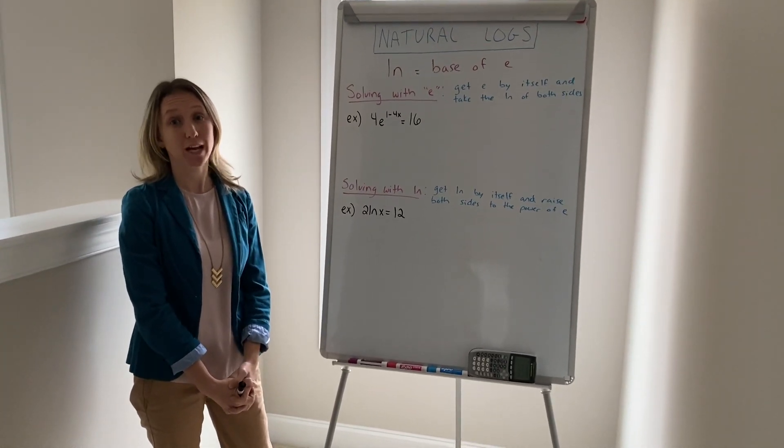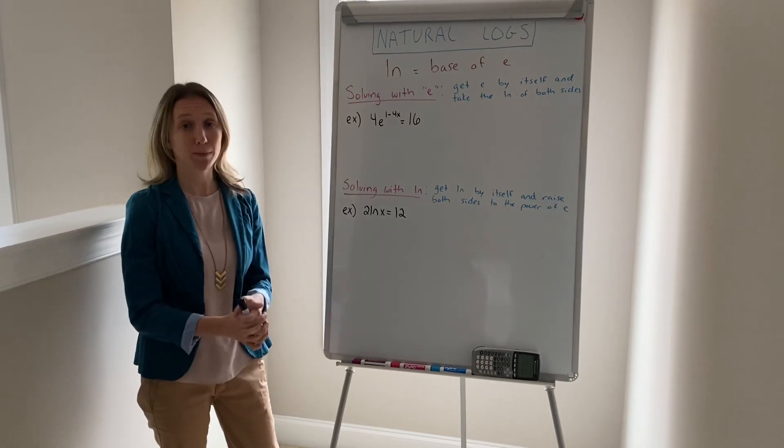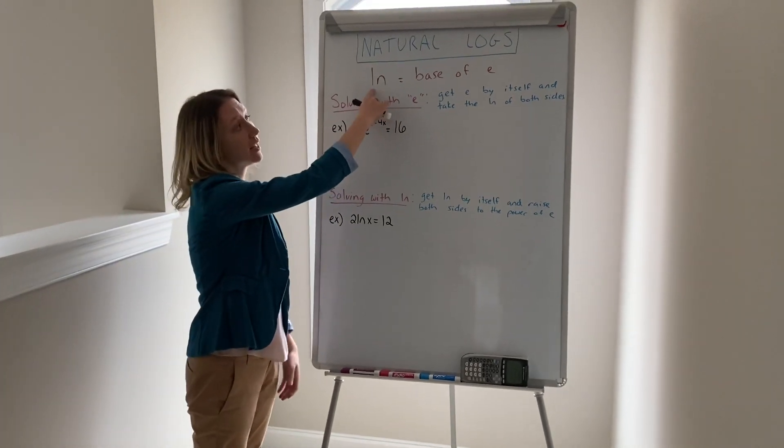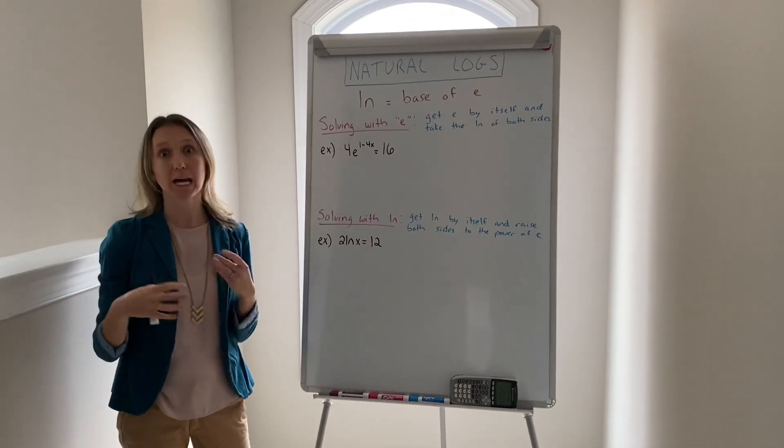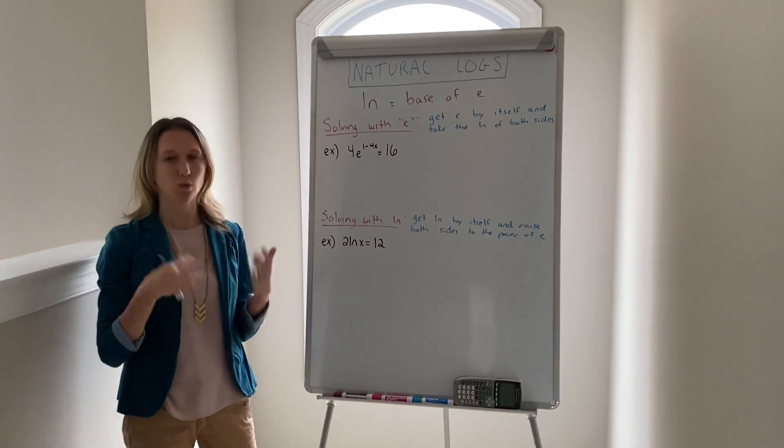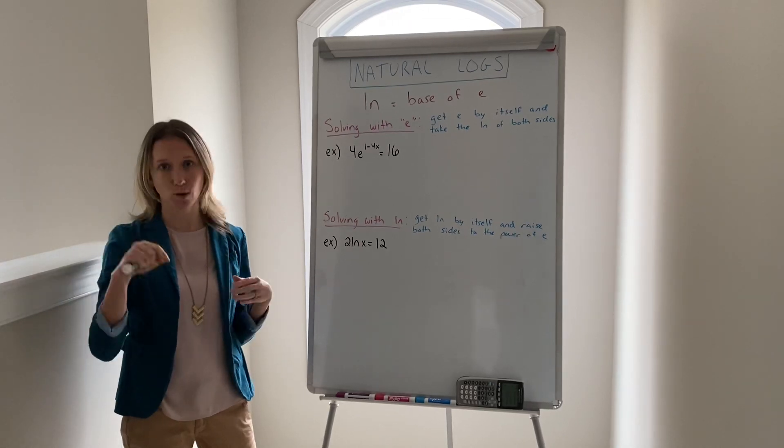We're going to talk about solving problems with natural logs. Natural log is represented by ln, and if you're working with natural logs, the base is automatically e. And e is not a variable, e is actually a number like pi. It's irrational and goes on forever, never ends, and there's a button for it on your calculator.